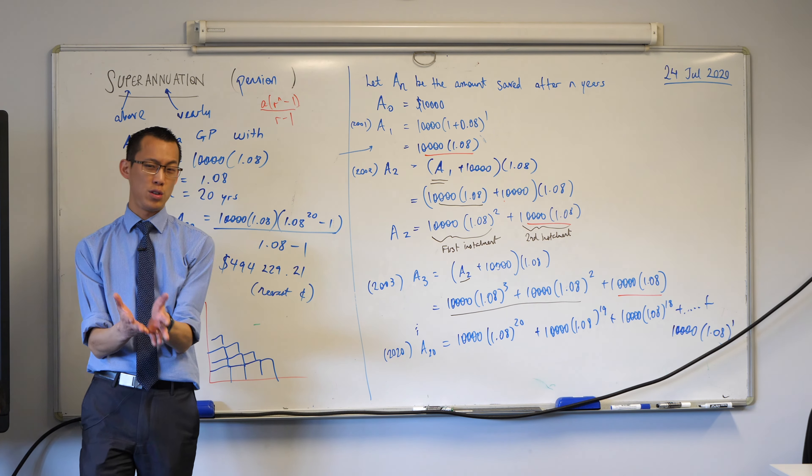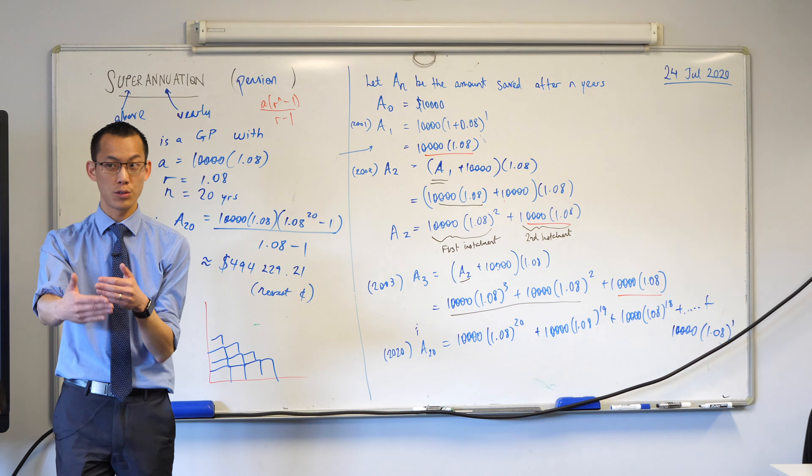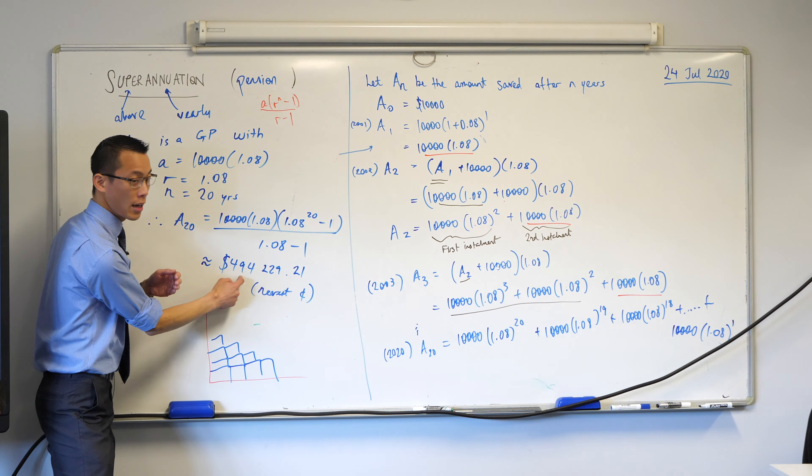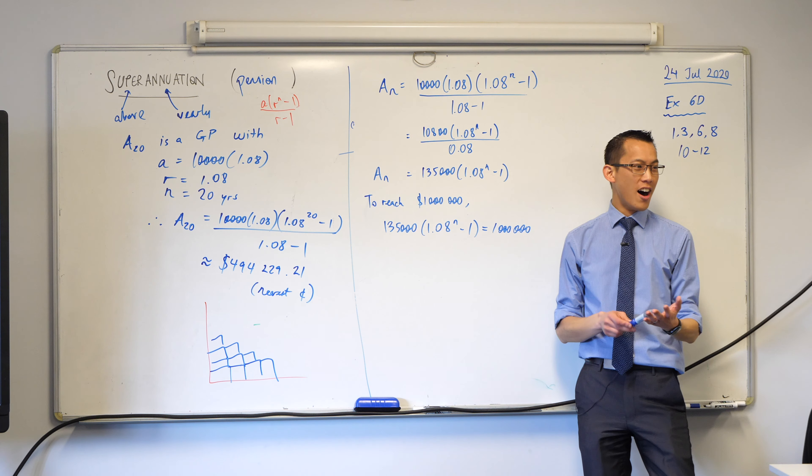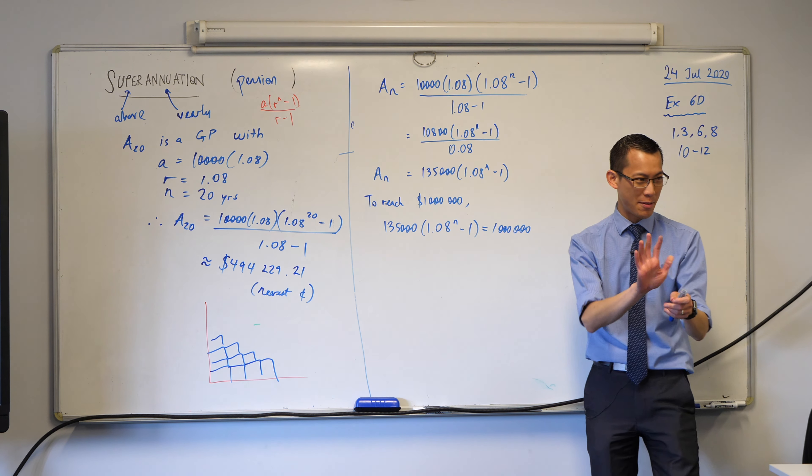Once you've got that, once you've answered part B, here's the question I would like you to answer. How long does it take to get to a million dollars? This is about half a million. I want you to try and work out how many years will it take to get this sum up to a million dollars?